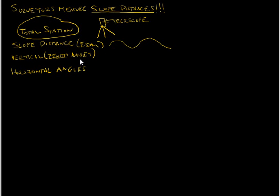A vertical angle is the same as the zenith angle, which is measured from straight up. It's a direction of straight up — kind of a hard thing to visualize, but if you have a level surface where you are, perpendicular to that surface would be straight up. That would be what you want to measure your vertical angle off of. That's why it's called the zenith — the zenith is straight up.